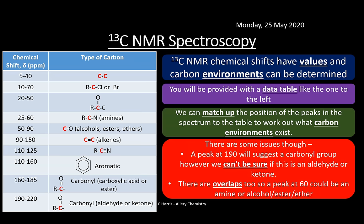There are overlaps in carbon-13 data — a peak at 60 ppm, for example, could indicate an amine, alcohol, ester, or ether. It narrows things down but isn't exact. This is why we don't rely on NMR alone — we use multiple spectra together to work out the structure.